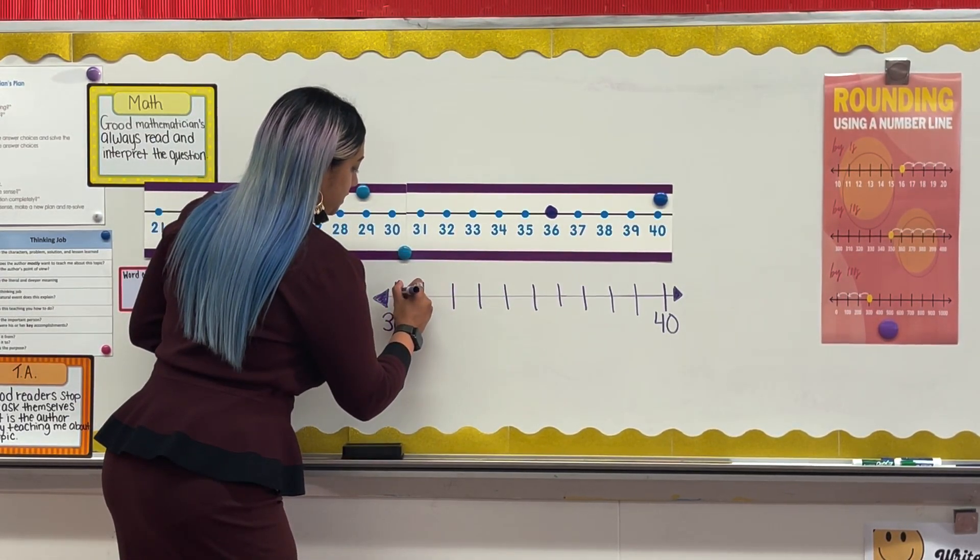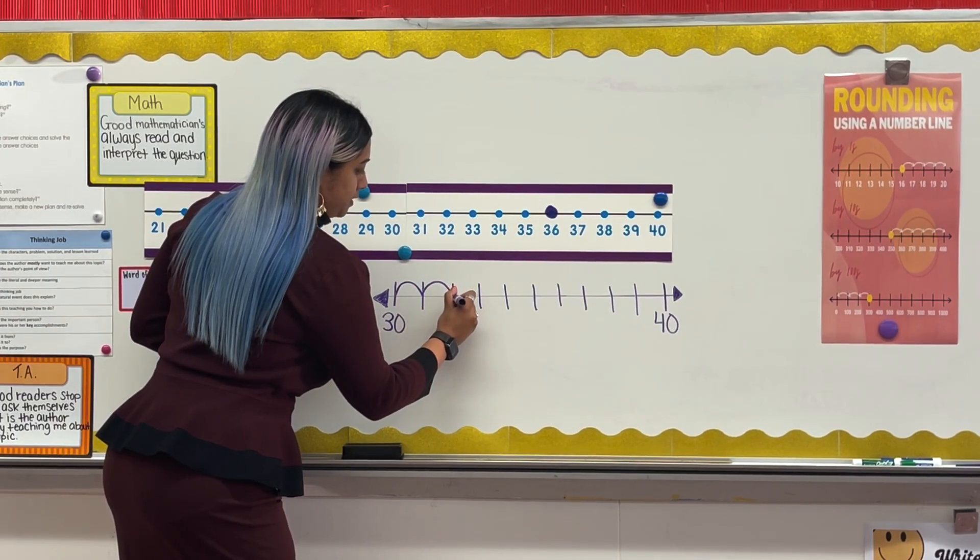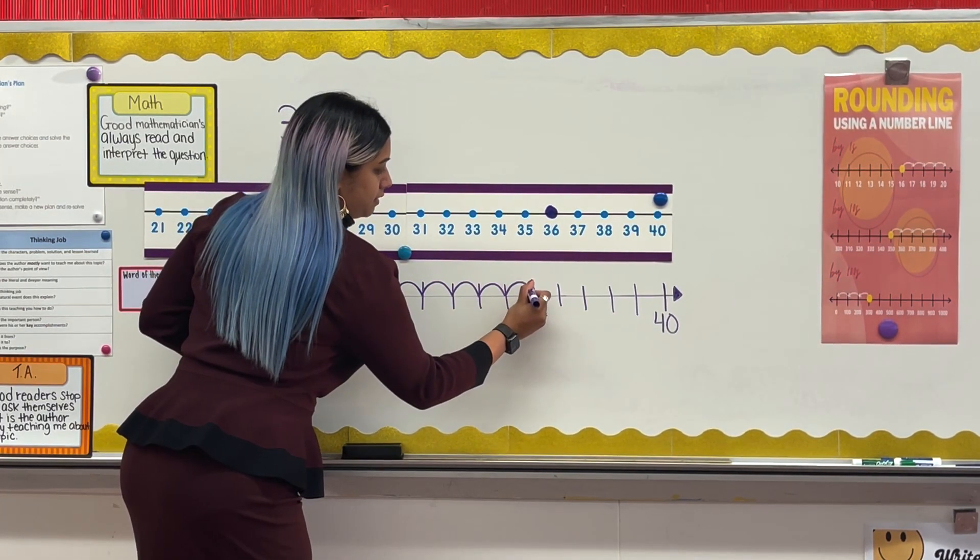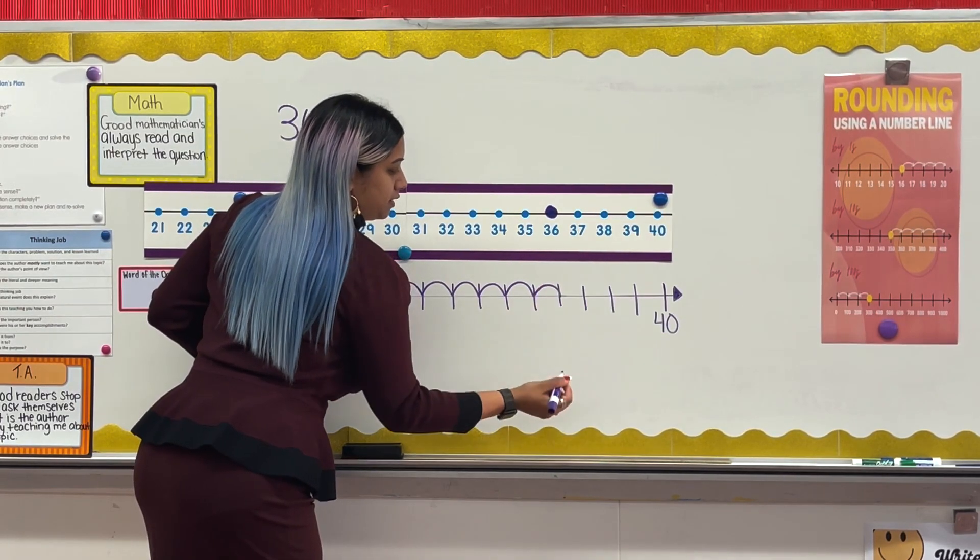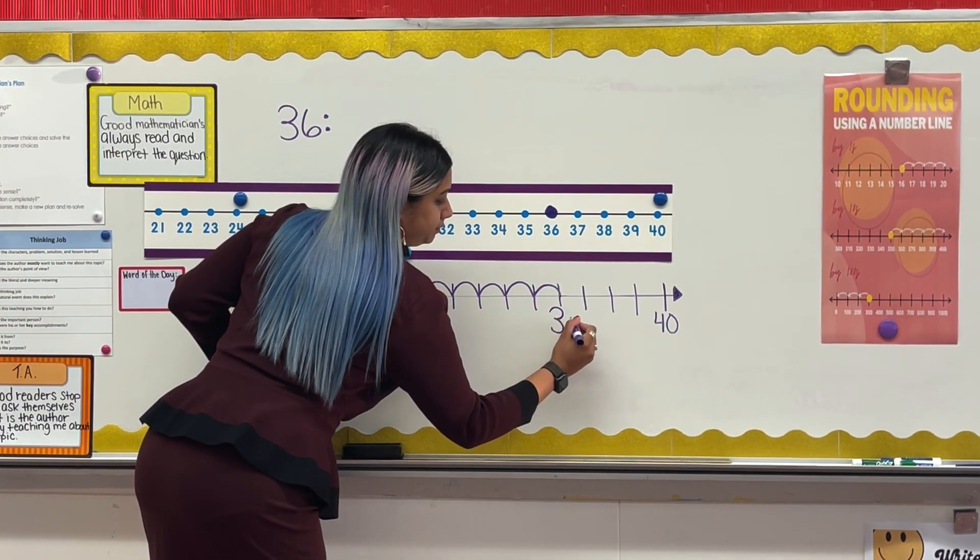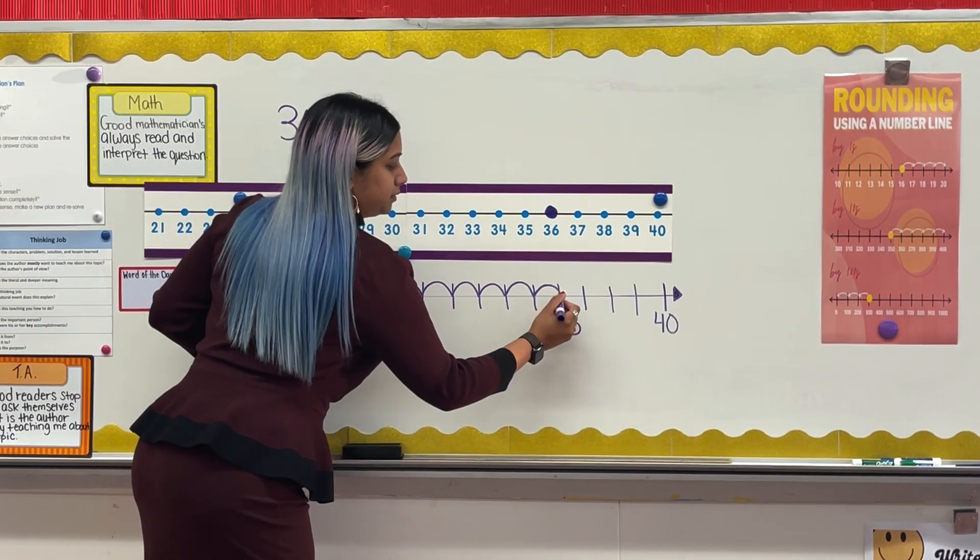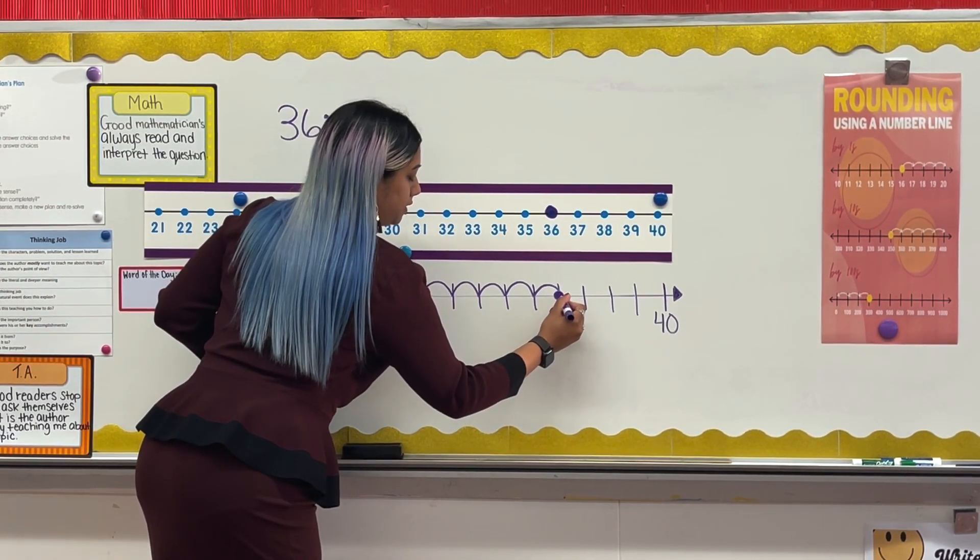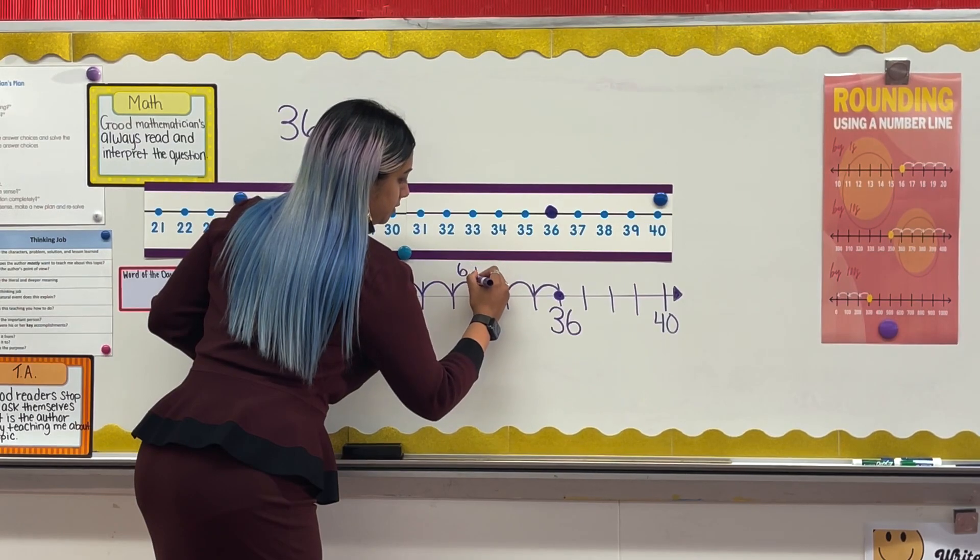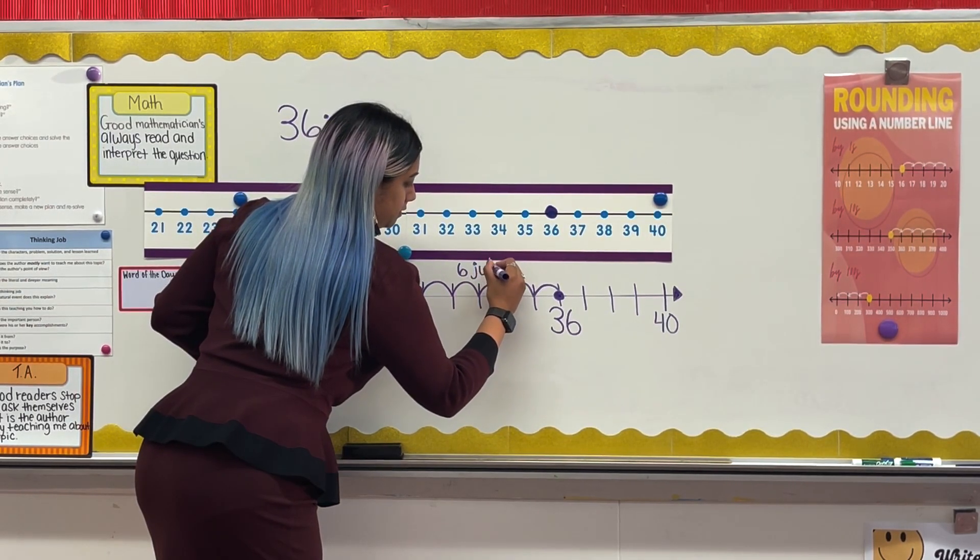So I'm going to go ahead and start from 30 and start jumping towards 36. From 30 to 36, I jumped six times.